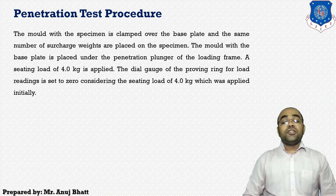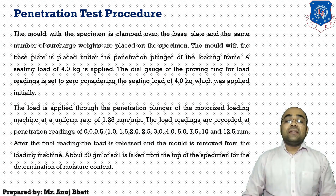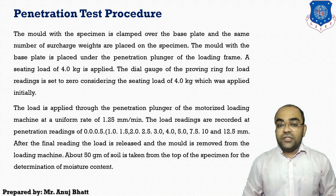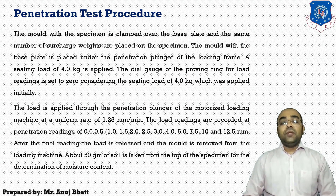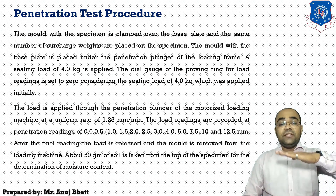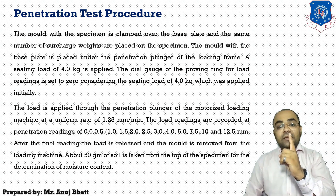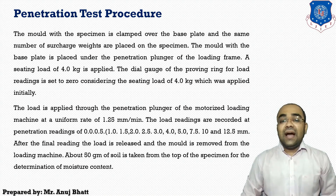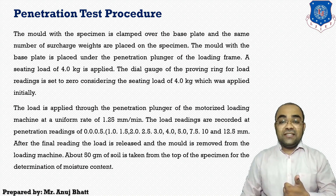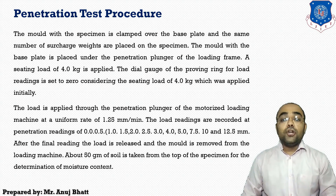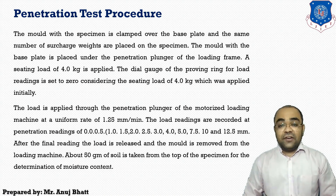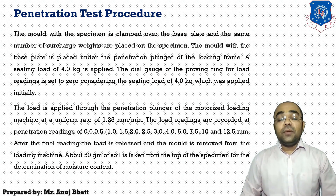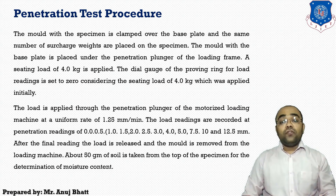The load is applied through the penetration plunger of the motorized loading machine at a uniform rate of 1.25 mm per minute. Load readings are recorded at penetration values of 0, 0.5 mm, 1 mm, 1.25 mm, 2 mm, 2.5 mm, 3 mm, 4 mm, 5 mm, 7.5 mm, 10 mm, and 12.5 mm. At each stage, the reading indicates how much load is applied to the soil to achieve that level of penetration.